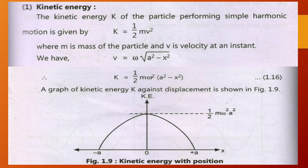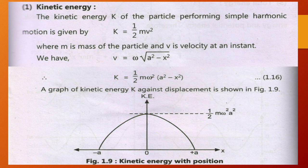The kinetic energy K of the particle performing simple harmonic motion is given by K = ½Mv², where M is mass and V is velocity of the particle at an instant. We have V = ω√(a² - x²). Therefore, the kinetic energy is equal to ½Mω²(a² - x²). The graph of kinetic energy K against displacement is shown in the figure.